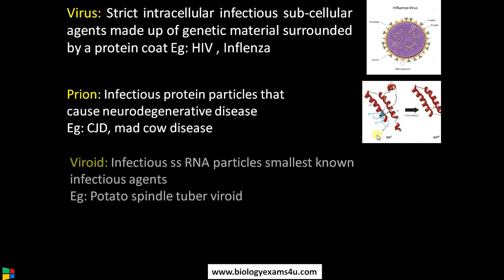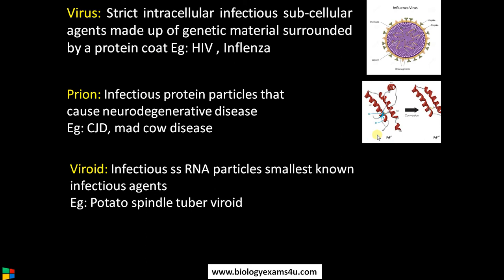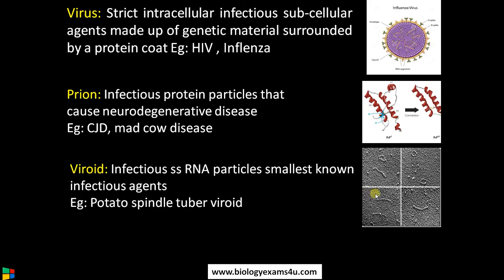The third exception is viroid. They are infectious single-stranded RNA particles often reported in plants. A classical example is the potato spindle tuber viroid. Just like infectious protein particles, this is simply an infectious single-stranded RNA particle.